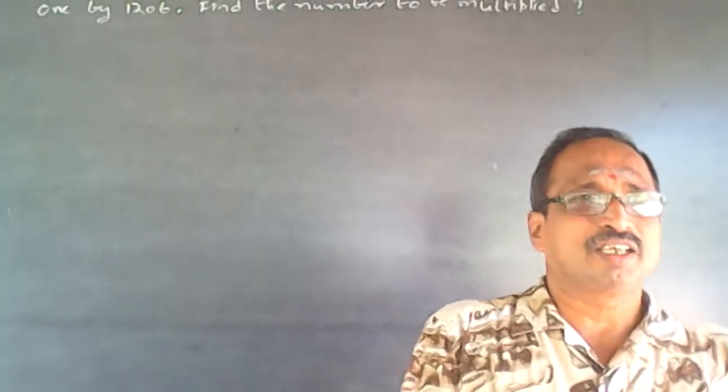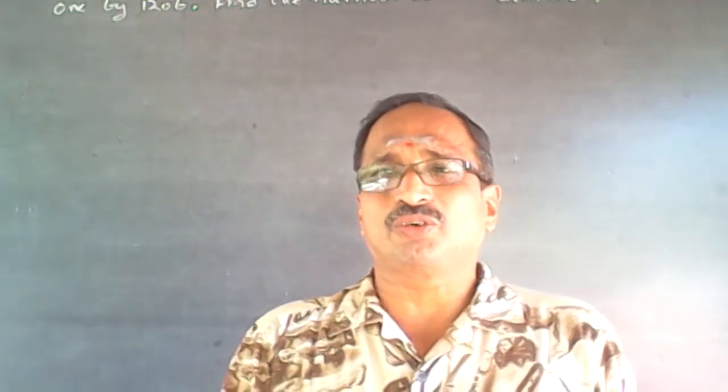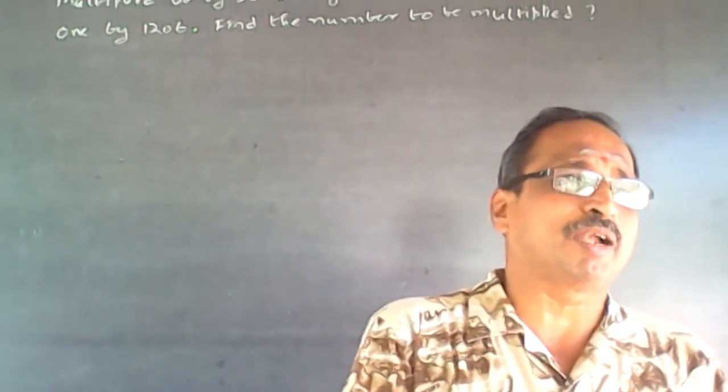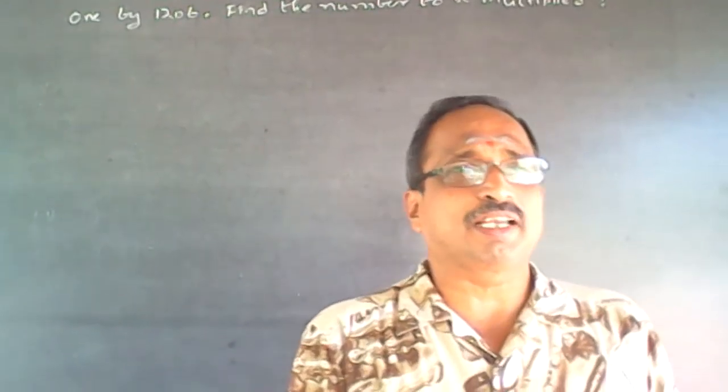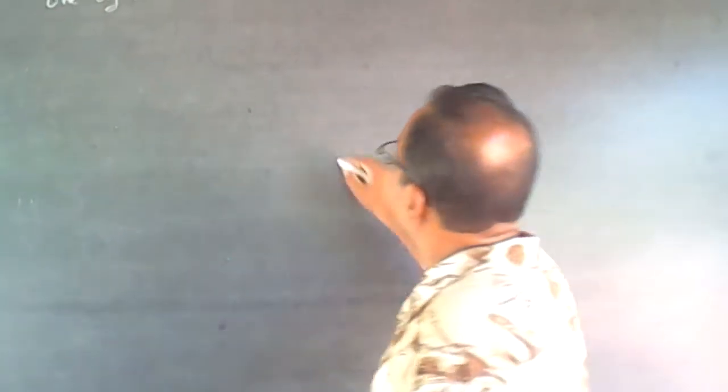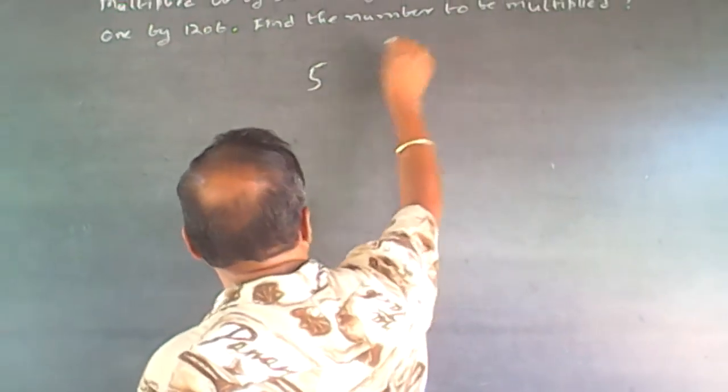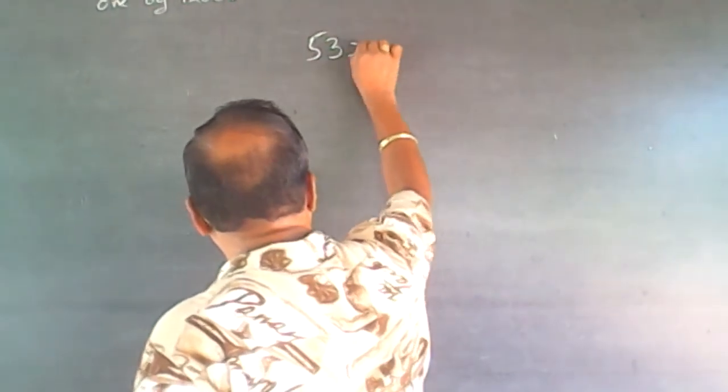Just a simple multiplication and the difference is 1206. A boy was asked to multiply it by 53. Let that number be x. So I have to find what is x. He was asked to multiply it by 53, 53 into x.